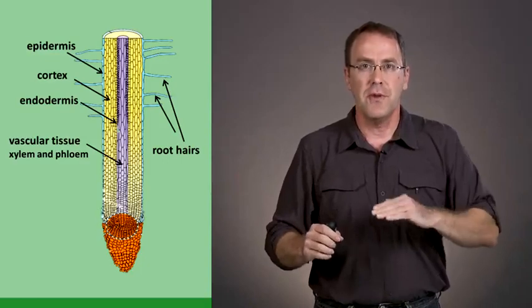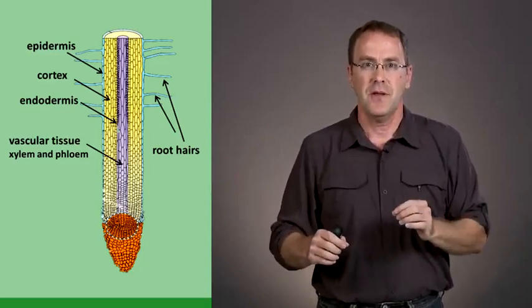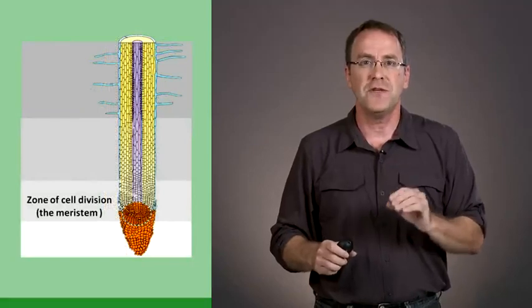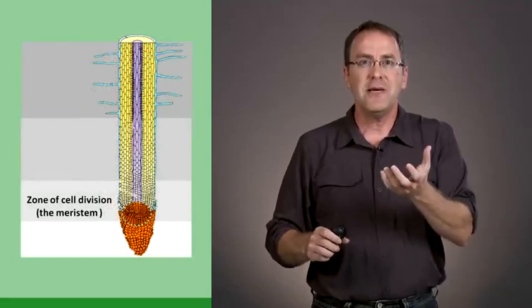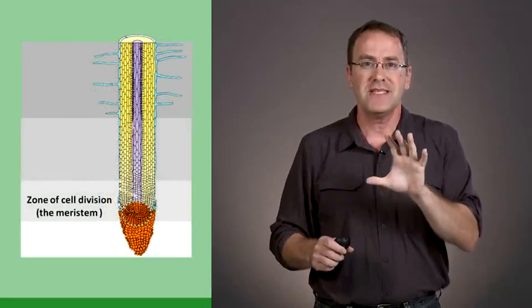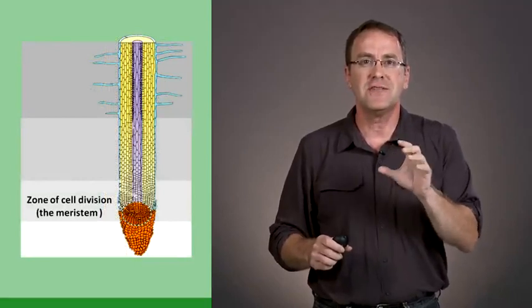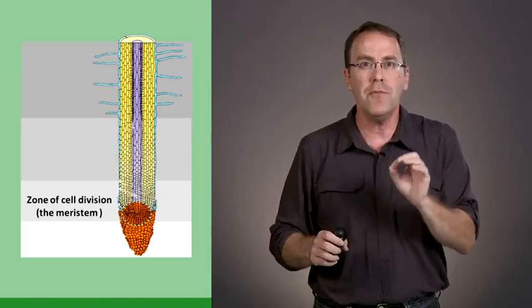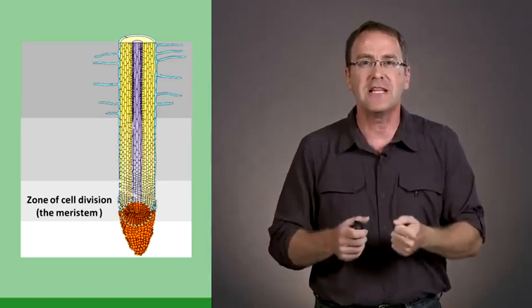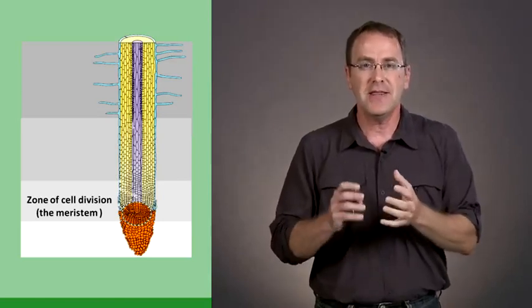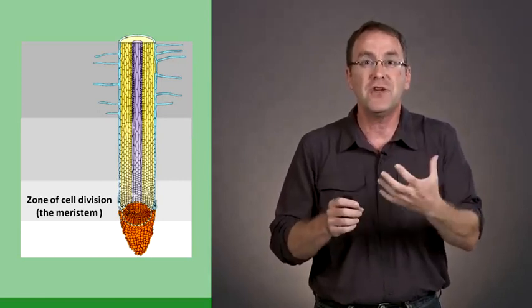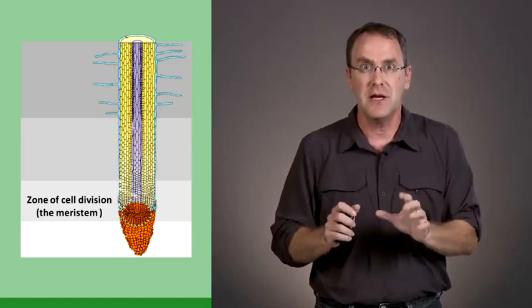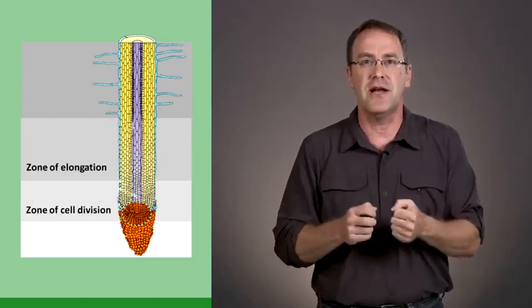Now we're going to take a look at the root from the bottom to the top. We can divide the root into four different sections. At the very tip of the root, we have a section called the area of cell division, also called the meristem. This is the only part of the root where cells actively divide. At this part of the plant, there's no difference between different types of cells. These are very similar to human stem cells.